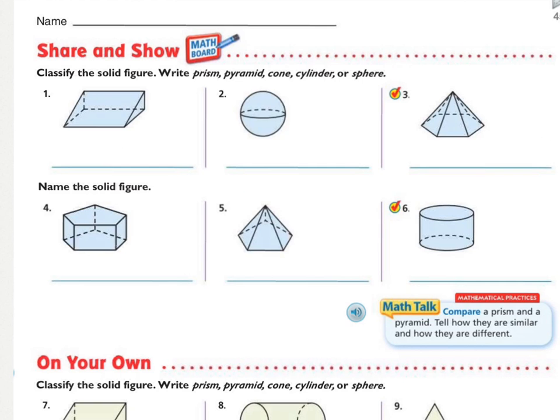For today's Share and Show, make sure you read the directions. Classify the solid figure. Classify means to name it and put it into a category. You are to use the words prism, pyramid, cone, cylinder, or sphere. I would like you to try to, if it is a prism or a pyramid, name it based on the base. This first one is where the triangles are. It's a triangular prism because this has a triangle here and a triangle here connected together. I would write triangular prism. Try to name it based on the shape of the base if it's possible.